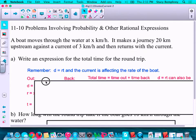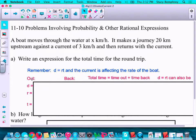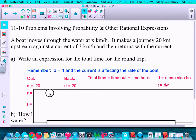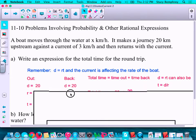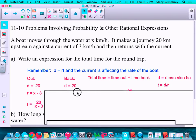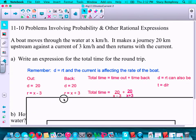So I'm going to encourage you to set it up as we did before. So you're going to do an out and a back column, and you're going to have D, R, and T under each. So I know the distance out was 20 and the distance back was 20. For the rates, if you focus here, I know I have a lot going on, focus right here.